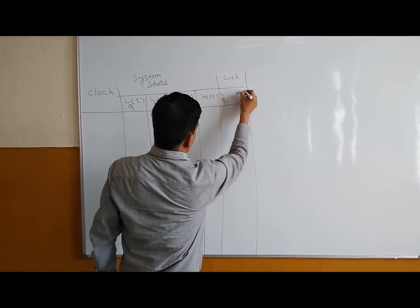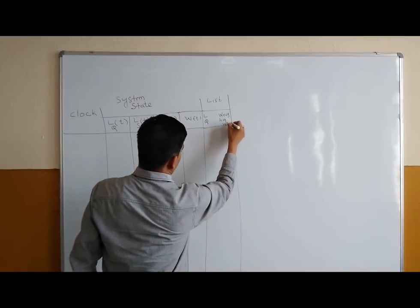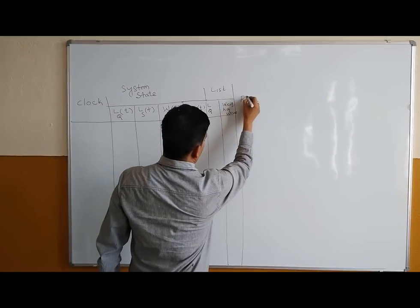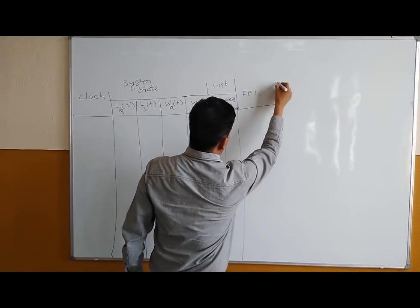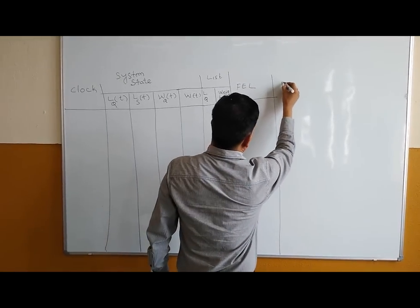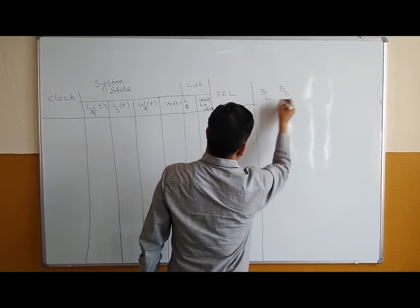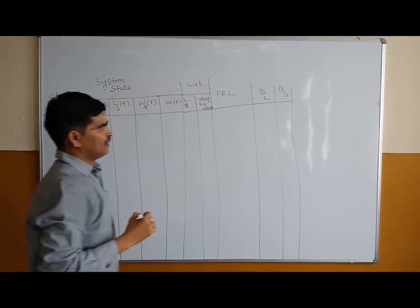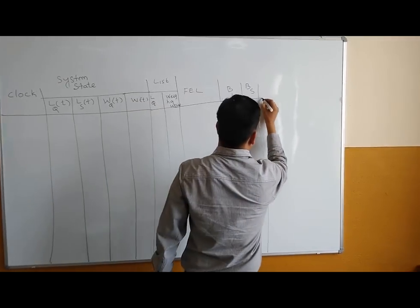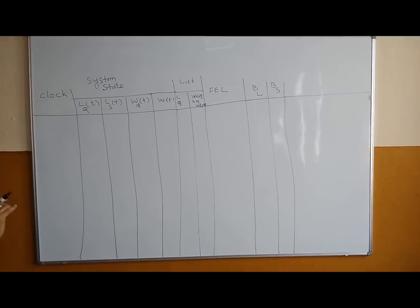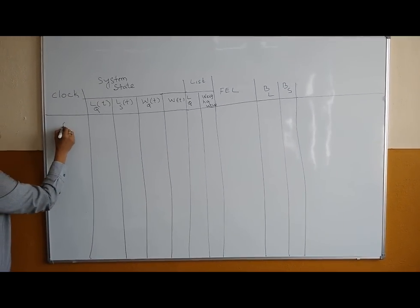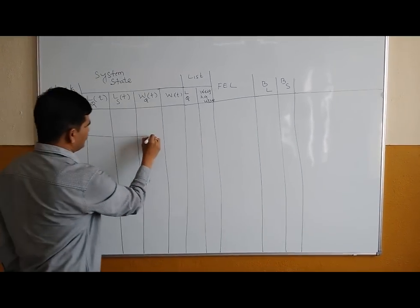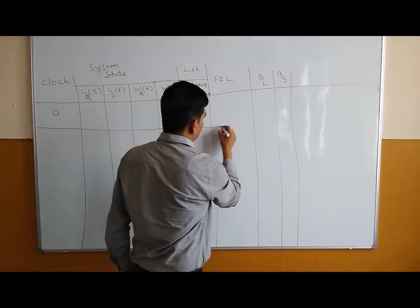Another important column is the future event list (FEL). Also important are BL and BS — the busy time of loaders L1 and L2 combined, and the busy time on the scale respectively. At time t=0, that is the initial condition. Without drawing the initial diagram it becomes very difficult, so you must draw the diagram showing the initial conditions.